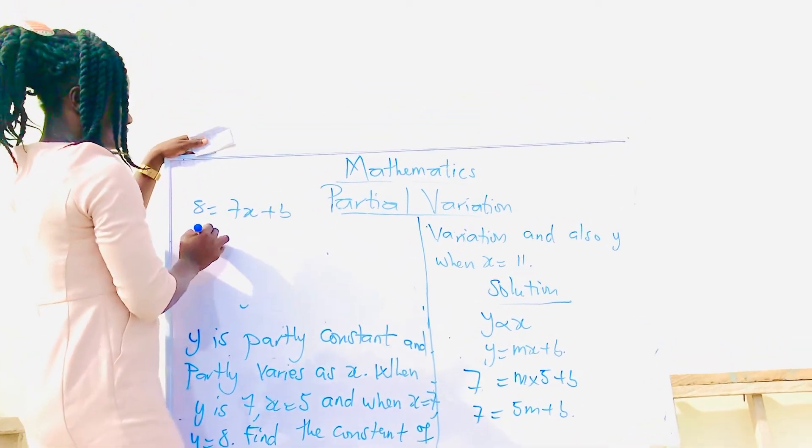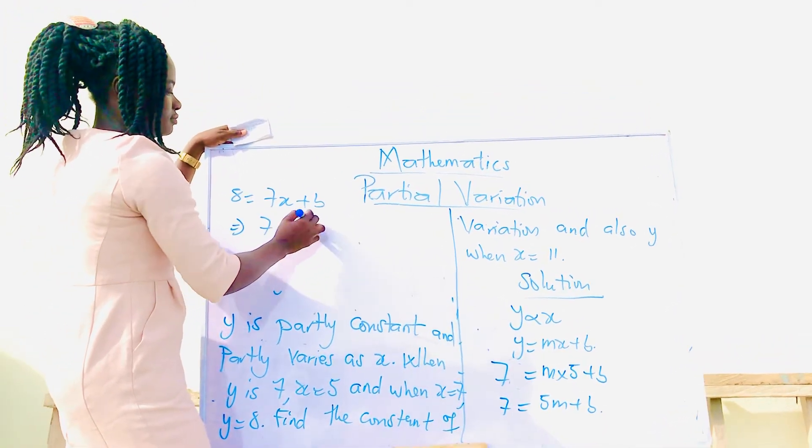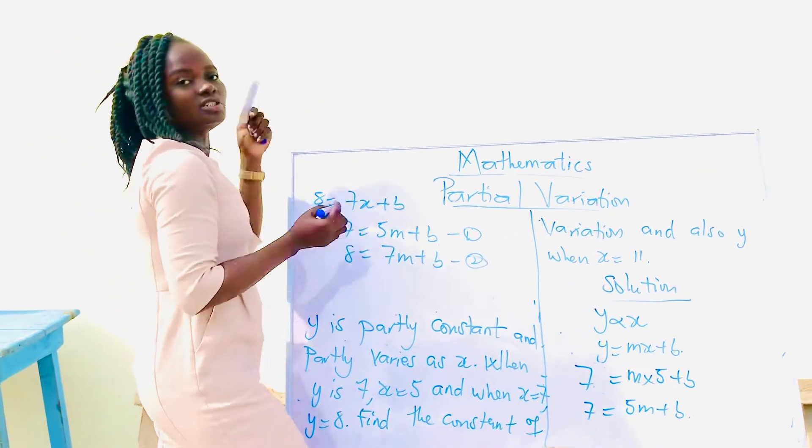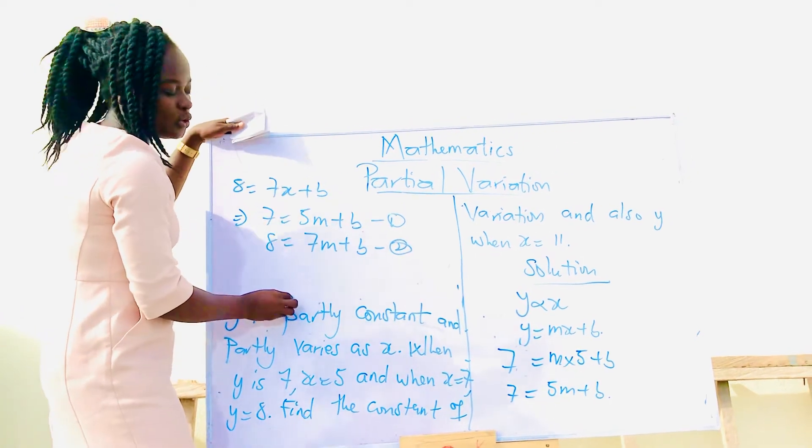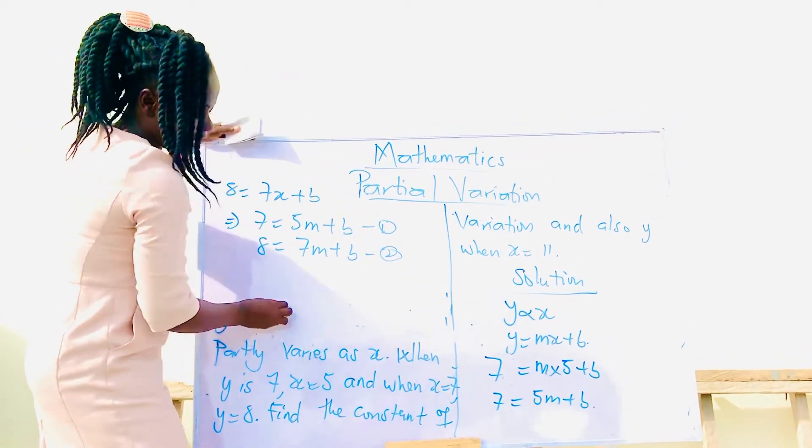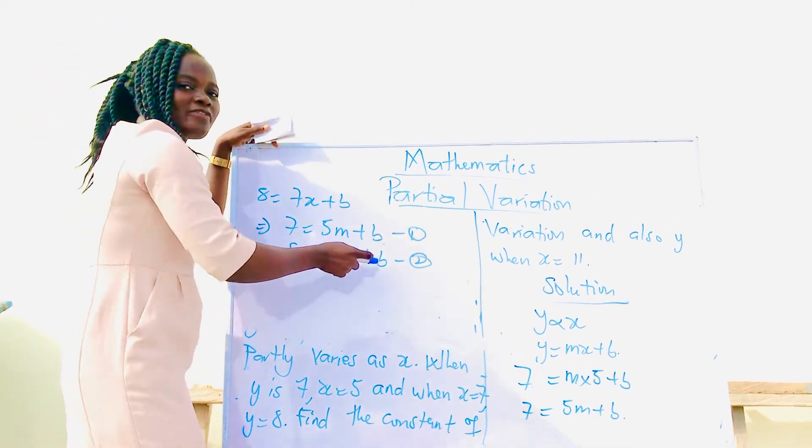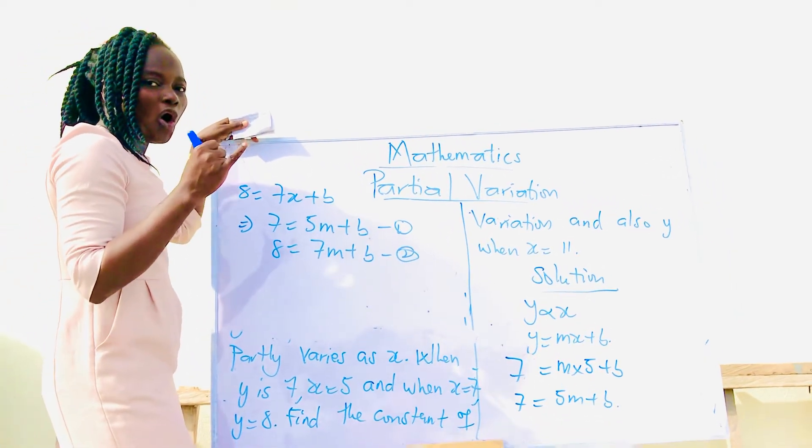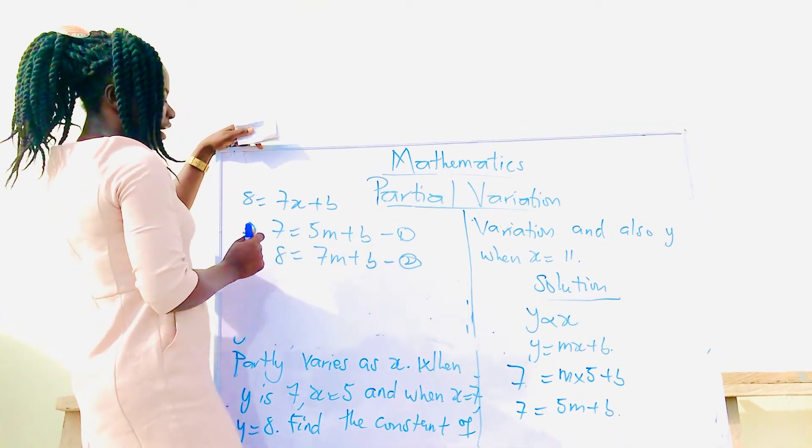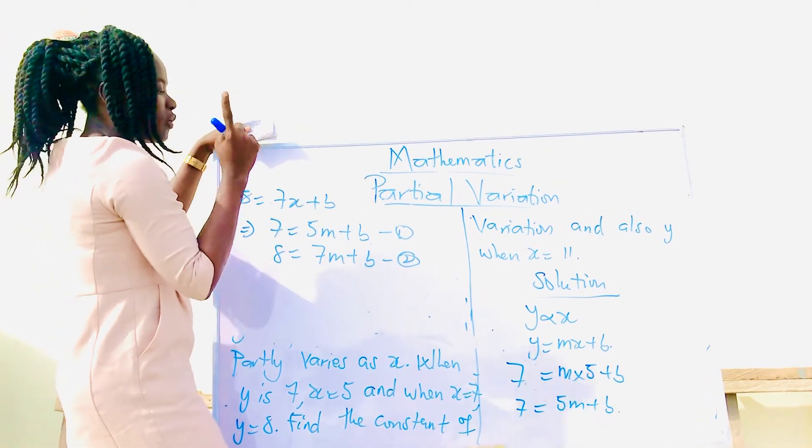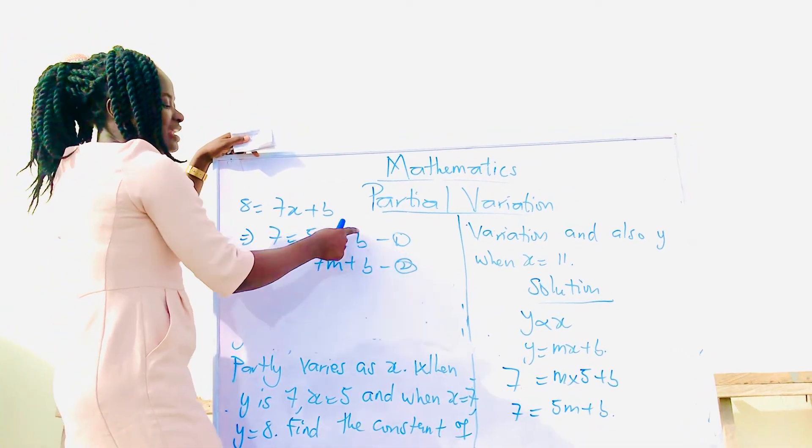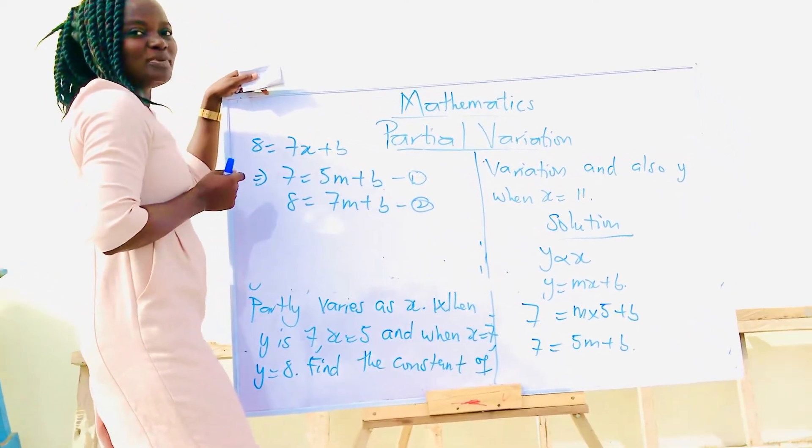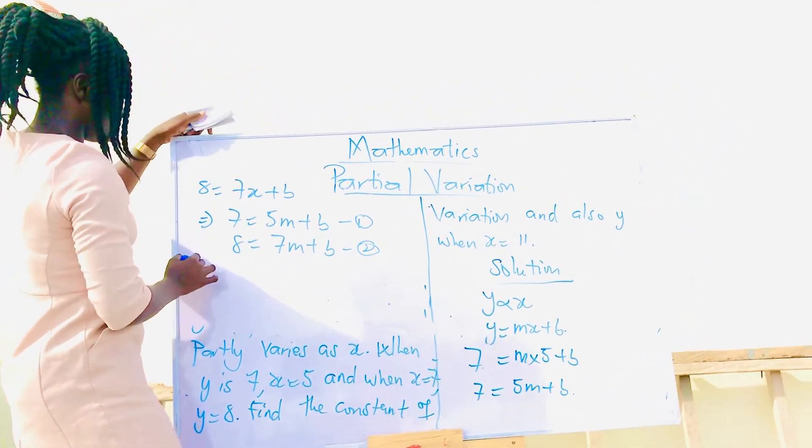You have our two equations now. What do we do? We can use any of the two methods. We can use the substitution method or the elimination method. For this equation, because the coefficient of b in equation 1 is 1, and the coefficient of b in equation 2 is also 1, we can easily eliminate b from our equation. We subtract equation 1 from equation 2.